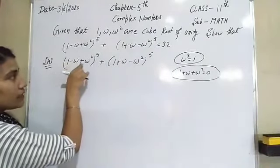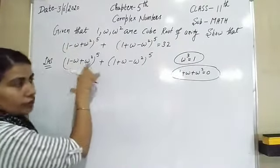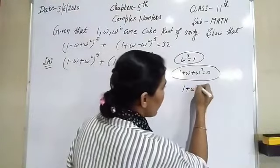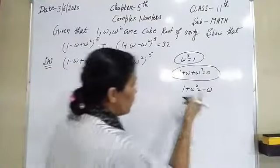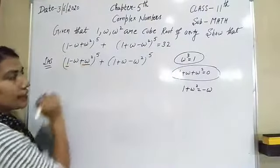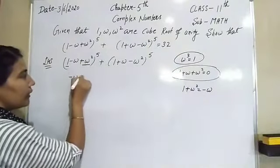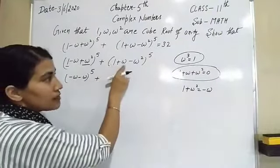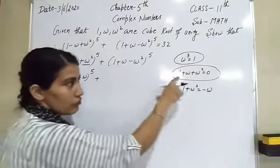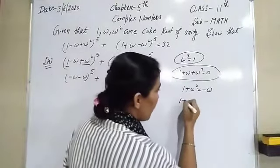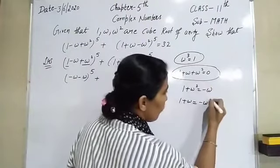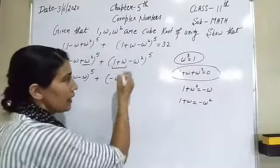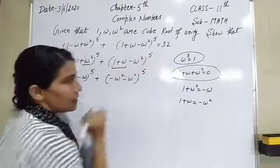Look at 1 − ω + ω²: this contains (1 + ω²). From 1 + ω + ω² = 0, we get 1 + ω² = −ω. So 1 + ω² − ω becomes −ω − ω = −2ω. Similarly, for (1 + ω − ω²): from 1 + ω + ω² = 0, 1 + ω = −ω². So it becomes −ω² − ω² = −2ω².